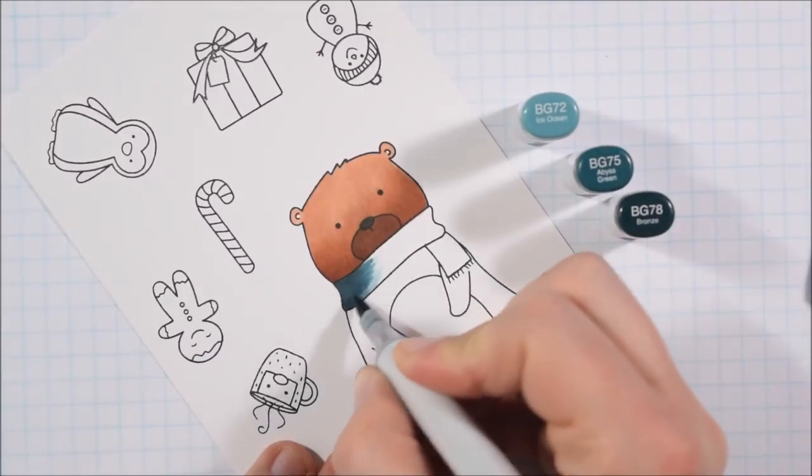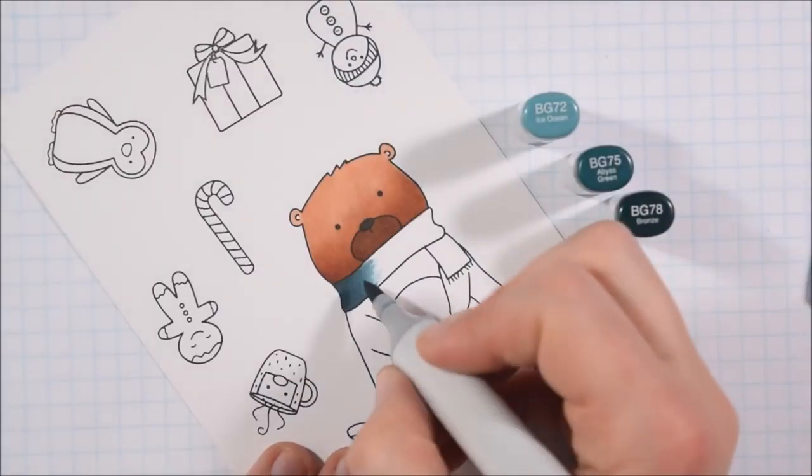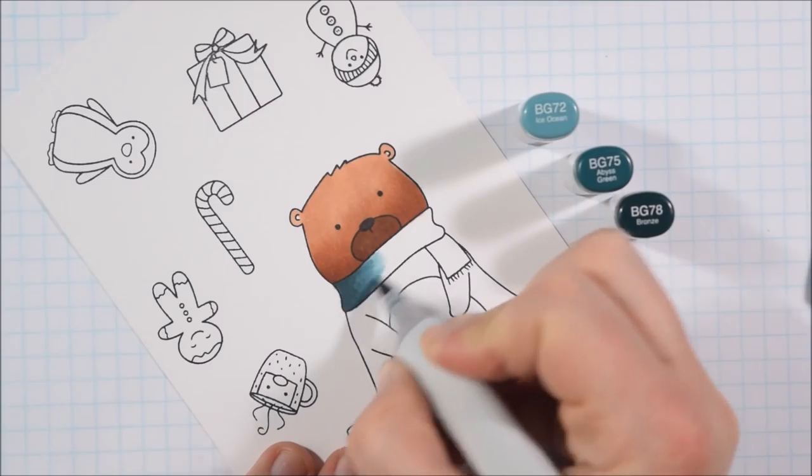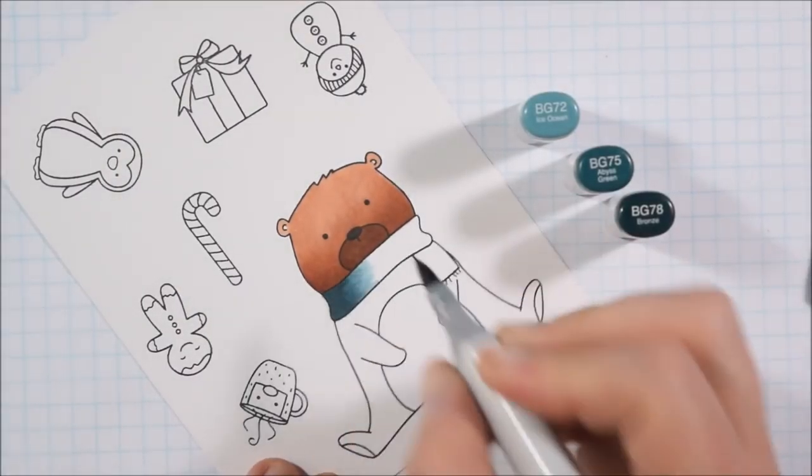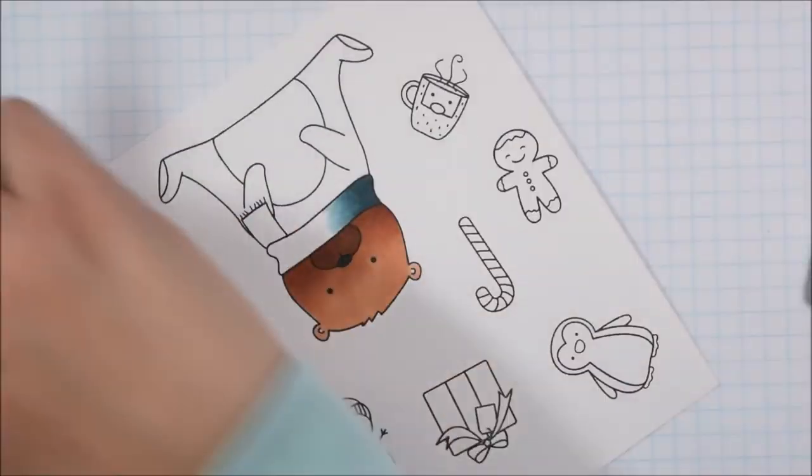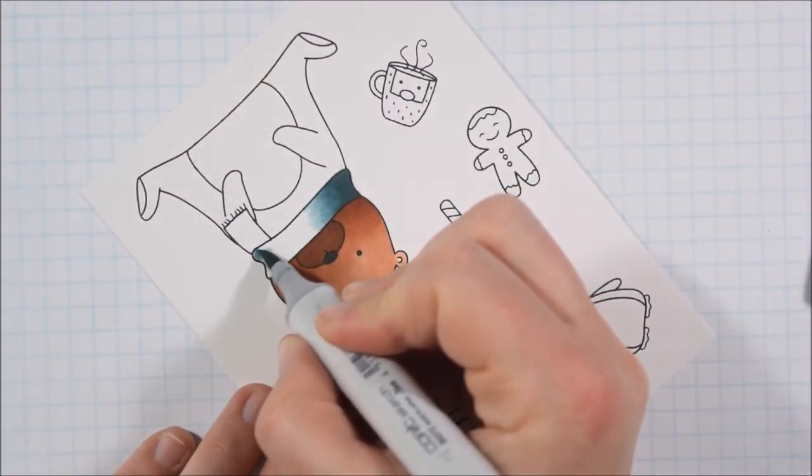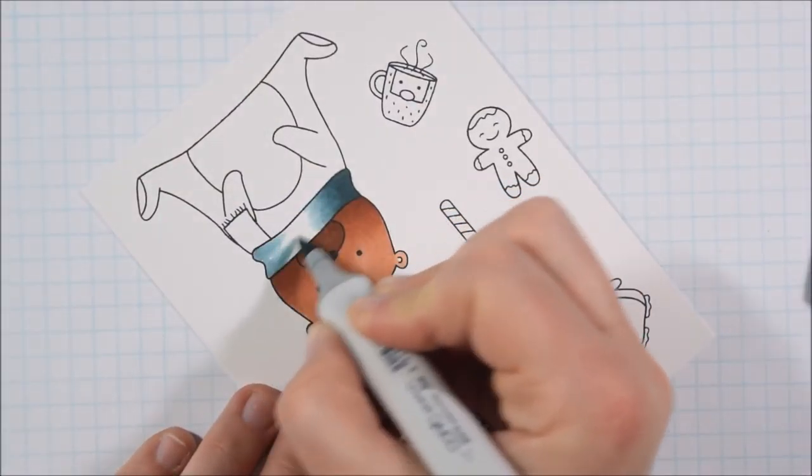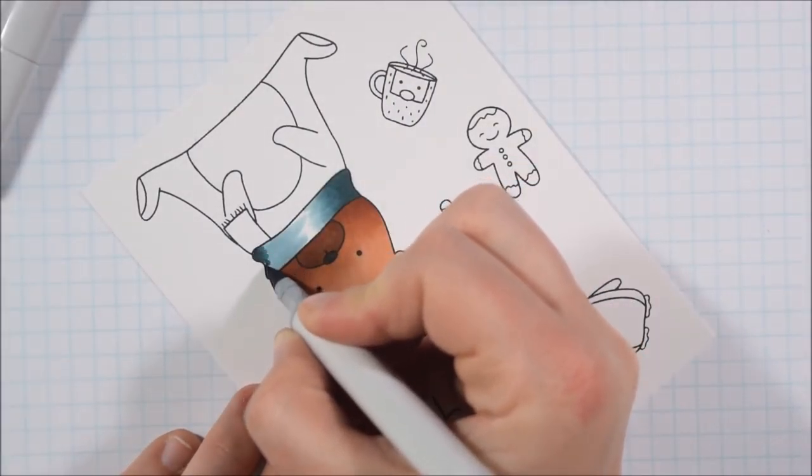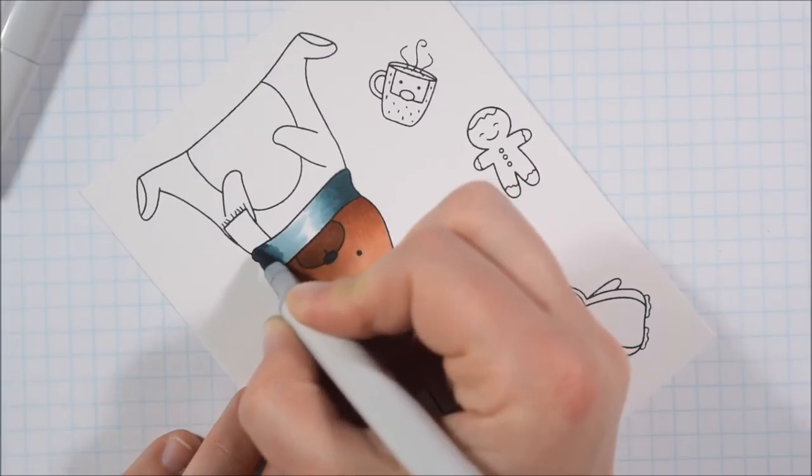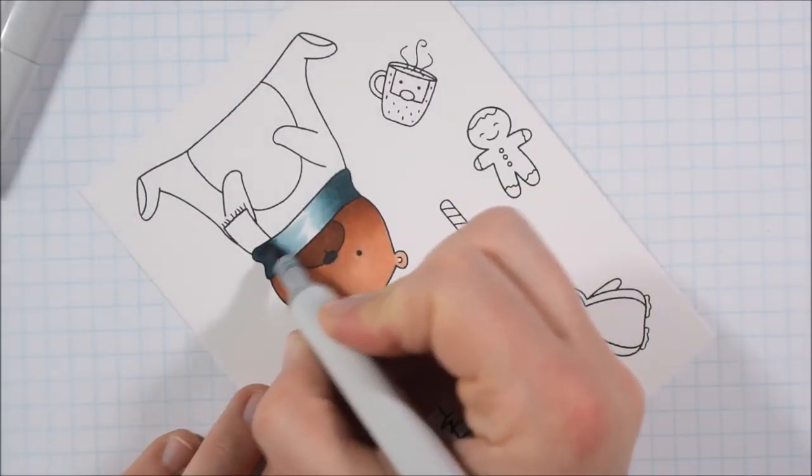So I am using BG72, 75, and 78 to color in his scarf. I just really love the way that teals and blues combine with browns and oranges so because it's such an orangey brown I even particularly more like using the blue with it. It's not very traditional in Christmas colors and I'm not going to particularly use traditional Christmas colors for my bear today.